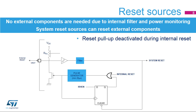Here is the simplified block diagram of the system reset. All internal reset sources provide a reset signal on the NRST pin, which can be used to reset other components of the application board. No external reset circuitry is needed due to the internal glitch filter and the safe power monitoring feature, which guarantees the reset of the application when VDD is below the selected threshold. The internal pull-up on the NRST pin maintains a high level when no reset signal drives it low.